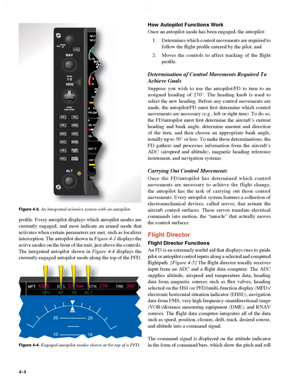How Autopilot Functions Work. Once an autopilot mode has been engaged, the autopilot: 1. Determines which control movements are required to follow the flight profile entered by the pilot, and 2. Moves the controls to effect tracking of the flight profile. Suppose you wish to use the autopilot/FD to turn to an assigned heading of 270 degrees. The heading knob is used to select the new heading.